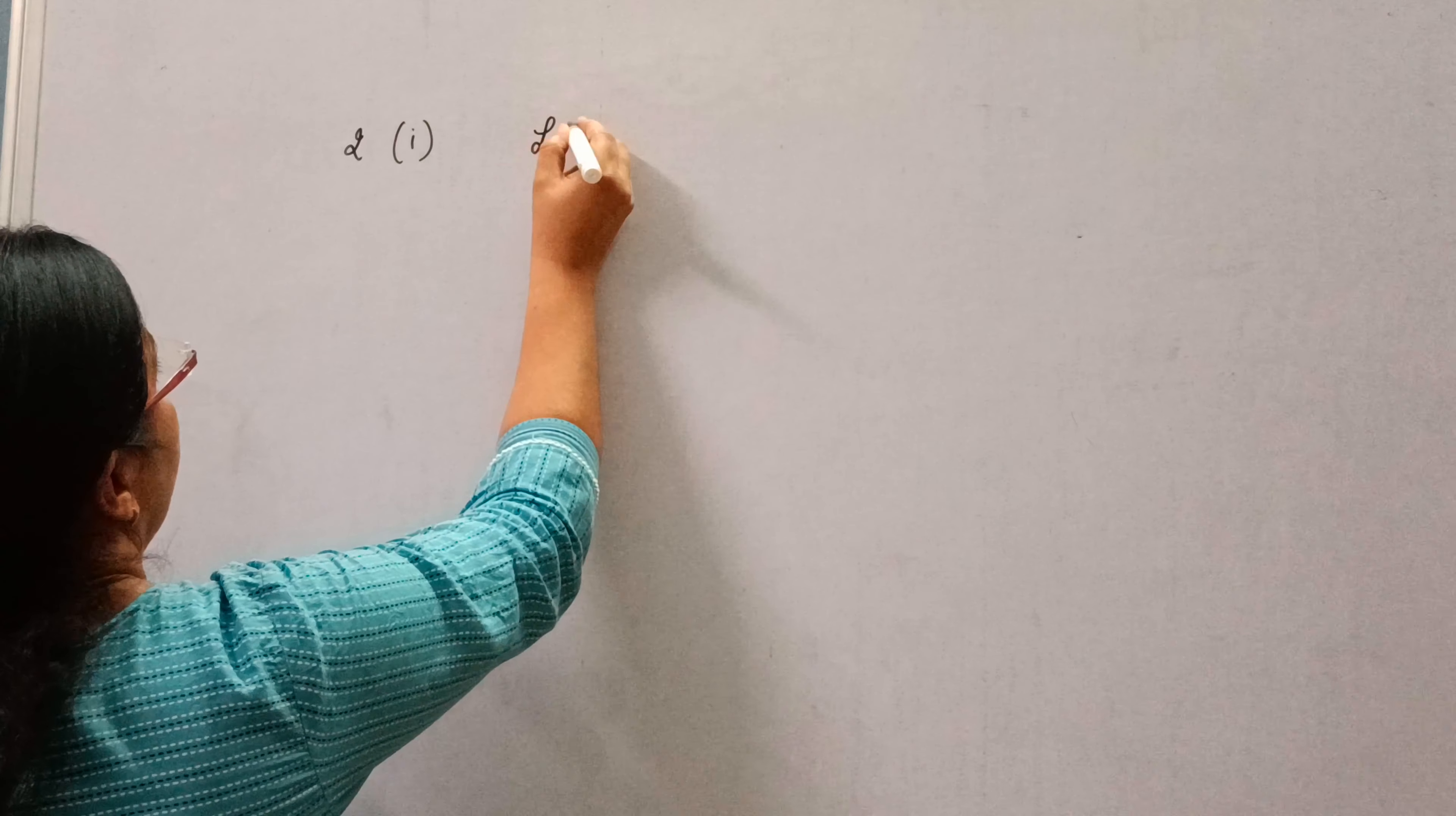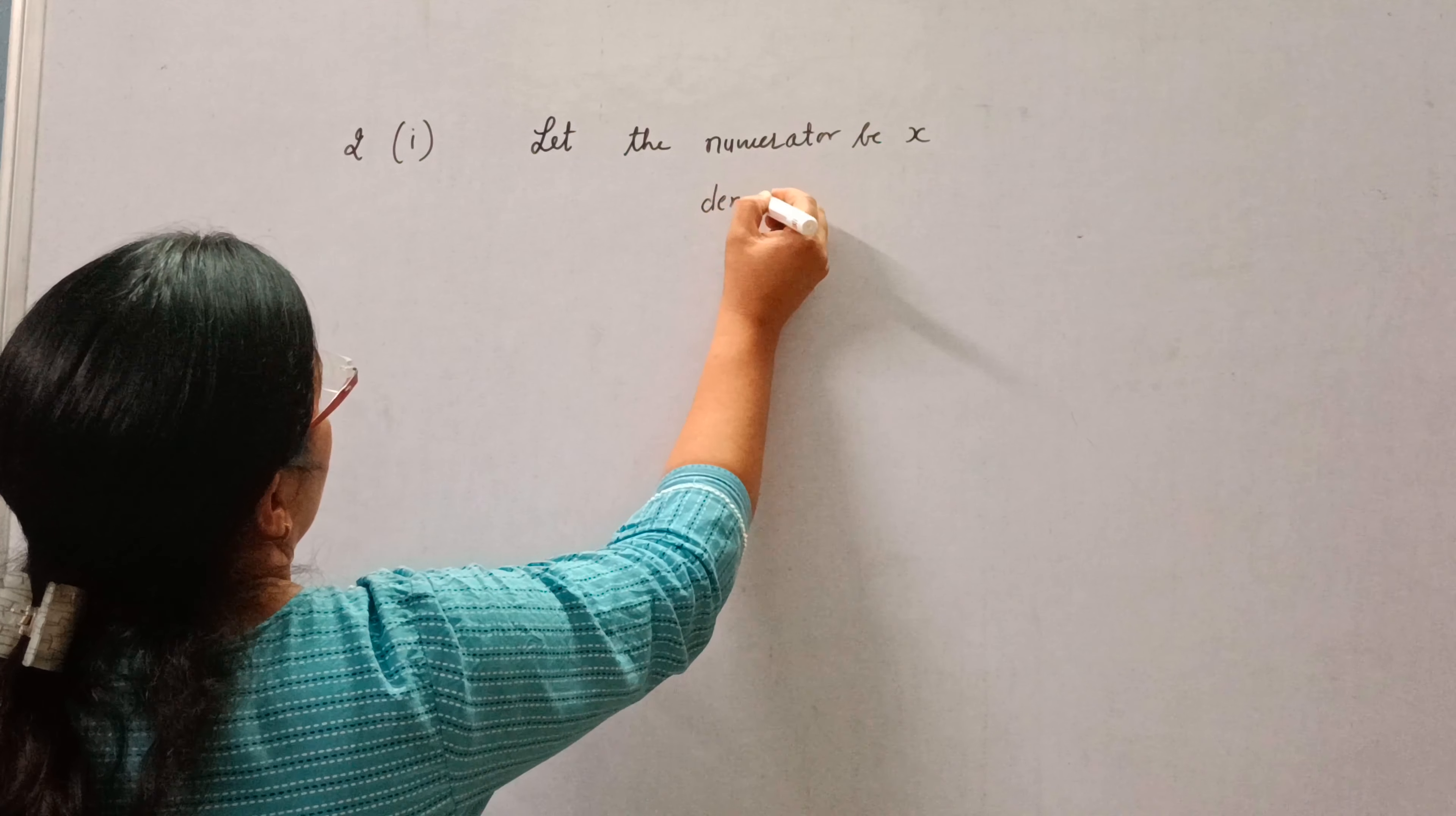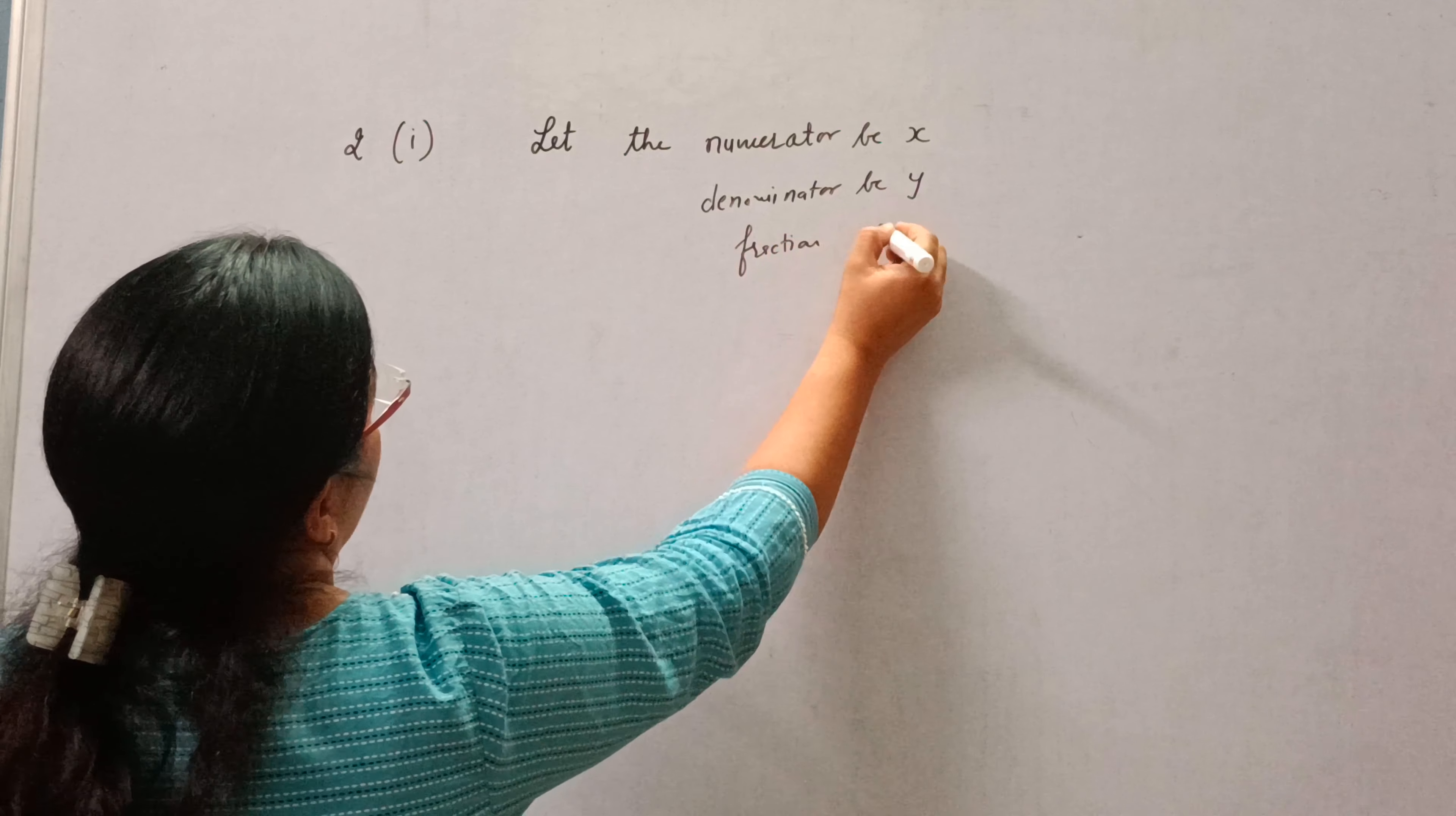If we add 1 to the numerator and subtract 1 from the denominator, the fraction reduces to 1. It becomes 1 by 2 if we only add 1 to the denominator. What is the fraction? Let the numerator be x and denominator be y, and the fraction will be x upon y.